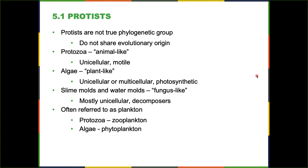Protists are not a true phylogenetic group — they don't share a common evolutionary origin. We have animal-like protists, plant-like protists, and fungus-like protists. Because they're mostly single-celled and don't fit in the animal or plant kingdoms, they're grouped as protists. Within protists, we use sub-categorizations that are more phylogenetic. Our protozoa are the animal-like protists — unicellular and motile like little animals. Algae are our plant-like protists. Slime molds and water molds are fungus-like, and they do very similar things to their larger, more complex cousins.